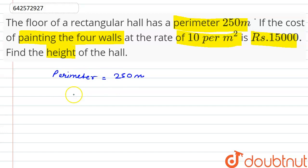So we know that the formula for perimeter of rectangle is twice of L plus B. So we are given here that twice of L plus B is equal to 250 meters, or we can also say that L plus B is equal to 125. So this is our first equation.